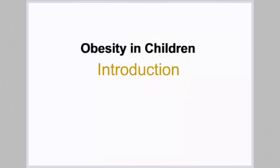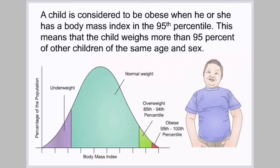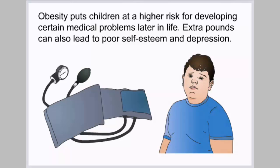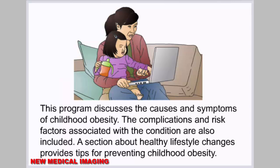Obesity in children. Introduction. A child is considered to be obese when he or she has a body mass index in the 95th percentile, meaning the child weighs more than 95% of other children of the same age and sex. Obesity puts children at higher risk for developing certain medical problems later in life, and extra pounds can lead to poor self-esteem and depression. This program discusses the causes, symptoms, complications, and risk factors of childhood obesity, and provides tips for prevention through healthy lifestyle changes.